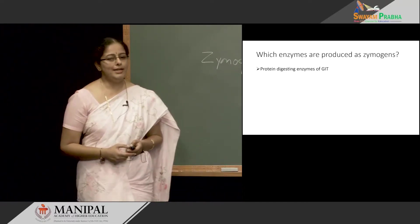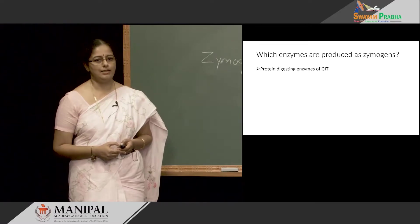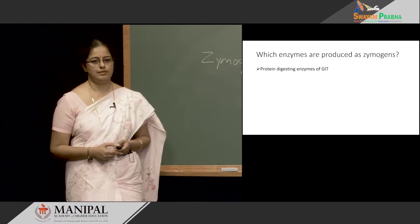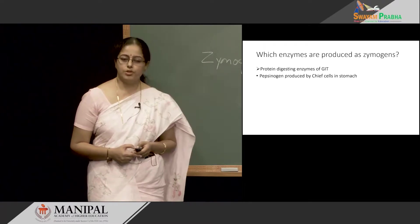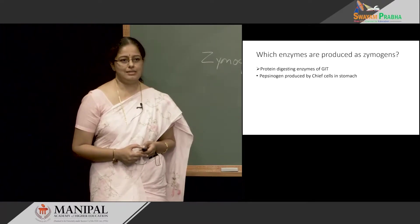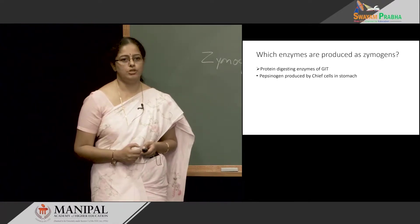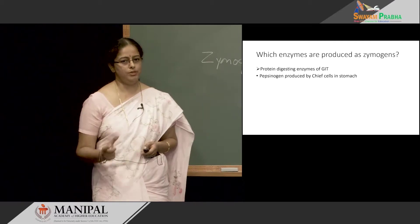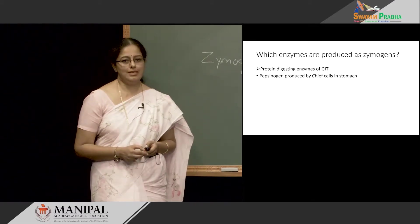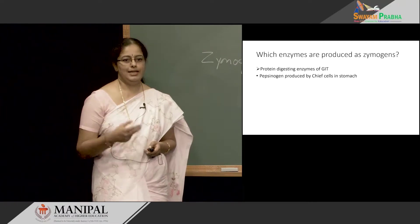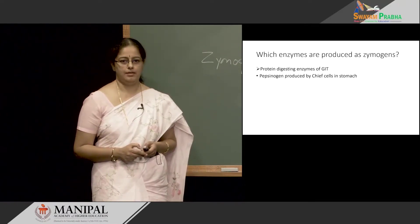Some of the protein-digesting enzymes of the gastrointestinal tract are produced as Zymogens. Pepsinogen is produced by the chief cells in the stomach. They are synthesized and stored as Zymogen, that is in pepsinogen form. Once the pepsinogen is released into the lumen of the stomach, it gets activated to its active form called pepsin.